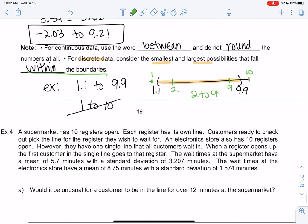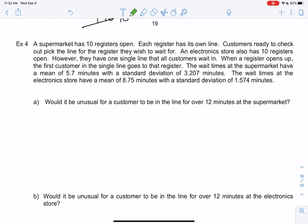A supermarket has 10 registers open. Each register has its own line. When you go to Safeway, usually there's more than one line—you pick a line and just hope for the best. At the electronics store, there's 10 registers but you get in a single line and they just call you up. The wait times at the supermarket have an average of 5.7 and a standard deviation of 3.207. The electronics store has a larger average at 8.75 but a smaller standard deviation at 1.574.